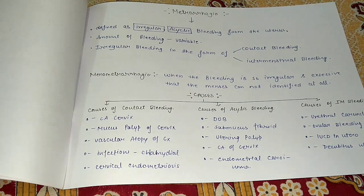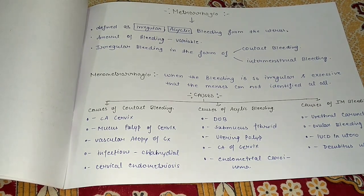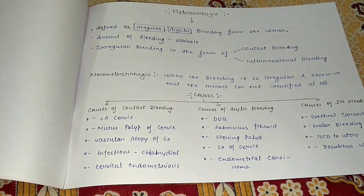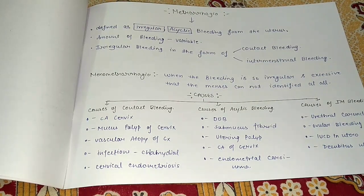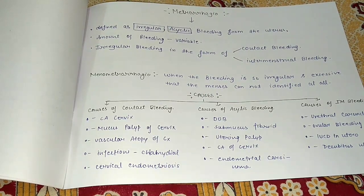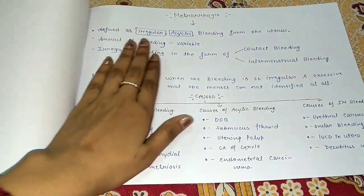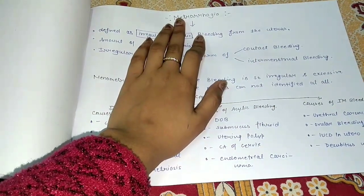Hey guys, welcome to the channel 'Learn with Fun Biology.' In this video I am going to talk about Metrorrhagia. In previous videos I have talked about Menorrhagia and Polymenorrhagia. I know these terms are very confusing, so if you watch those videos again and understand while I am explaining, you will get all the points. Metrorrhagia is defined as irregular, acyclic bleeding from the uterus.